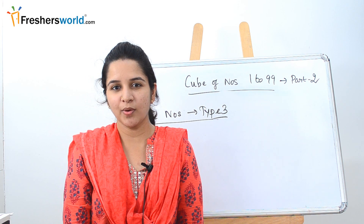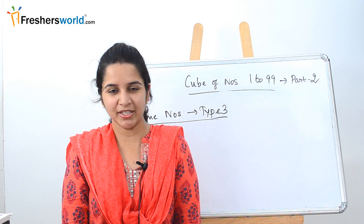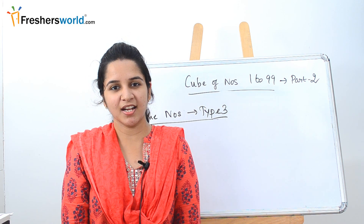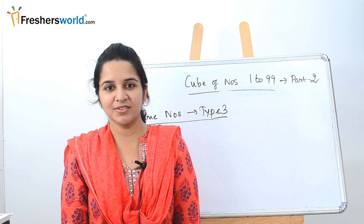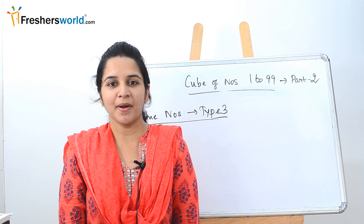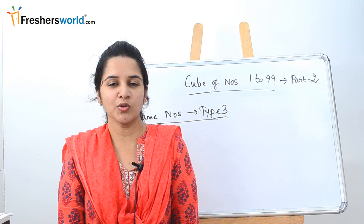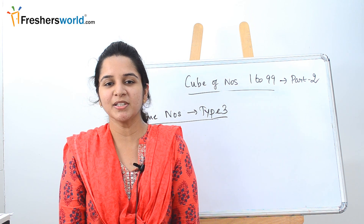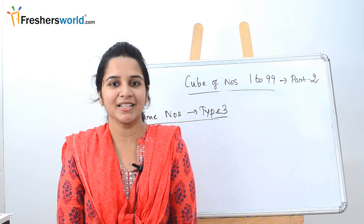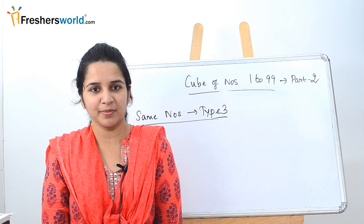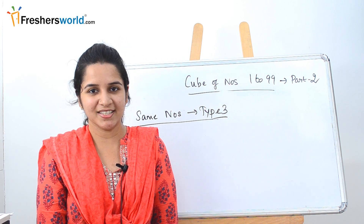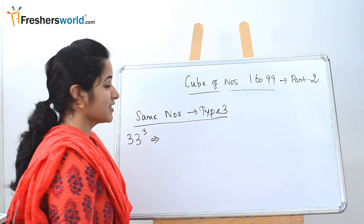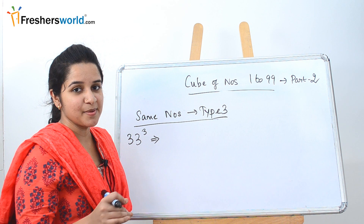In Part 1 of the topic, we dealt with two types — numbers that start with 1 and end with 1. In Part 2, we are going to deal with two other types: same numbers and different numbers. Let's get started with Type 3, which is same numbers.